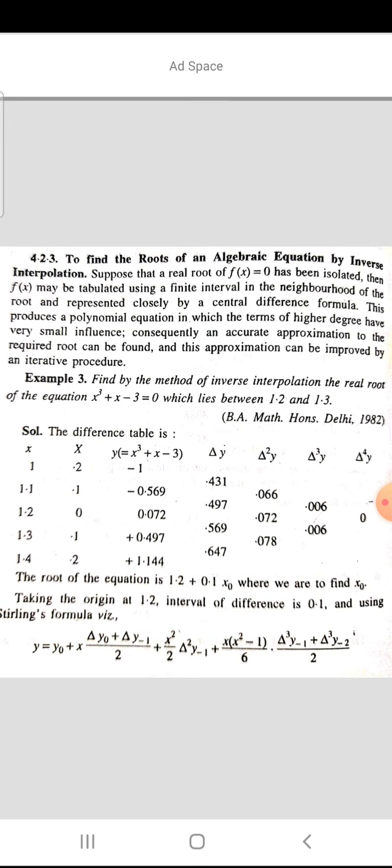Taking the region at 1.2, interval of difference is 0.1, and using Stirling's formula we can say that y = y₀ + x(Δy₀ + Δy₋₁)/2 + (x²/2)(Δ²y₋₁ + Δ²y₋₁) + [x(x² - 1)/6](Δ³y₋₁ + Δ³y₋₂)/2.